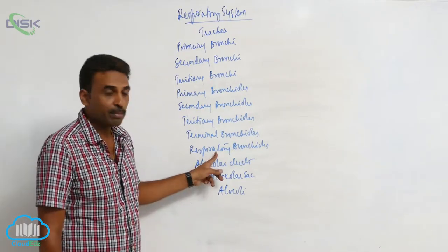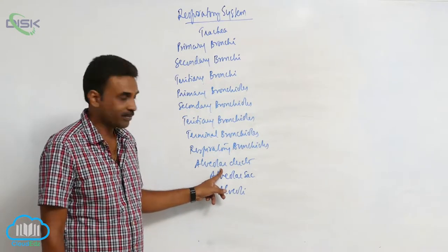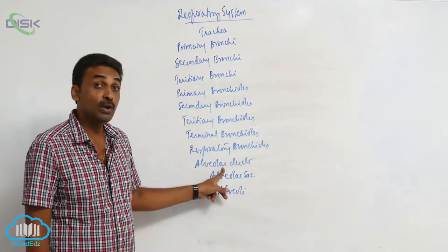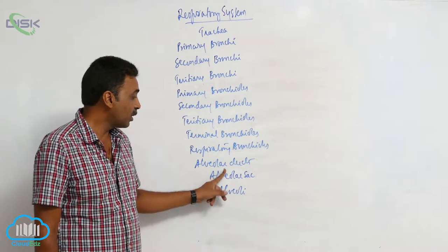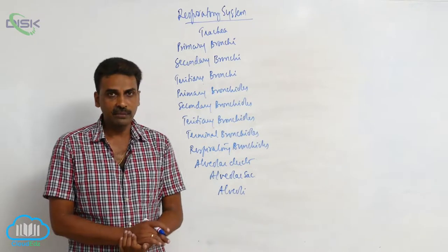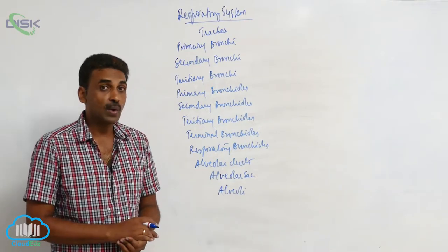Each respiratory bronchiole will divide into alveolar ducts. Each respiratory bronchiole will divide into 2 to 11 alveolar ducts. Each alveolar duct ends in an alveolar sac, and each alveolar sac contains 6 to 8 alveoli.